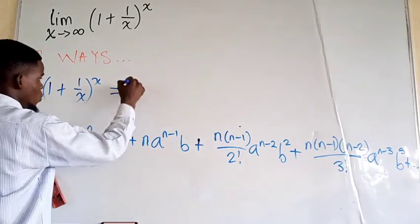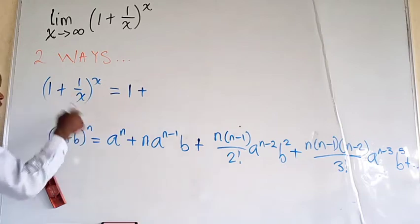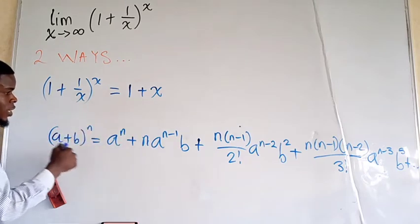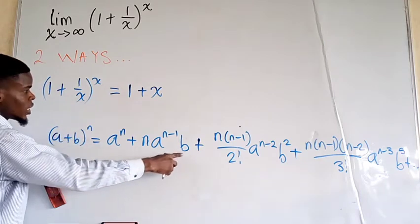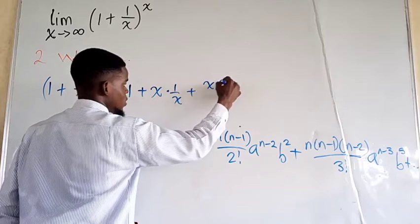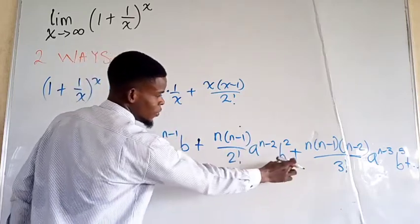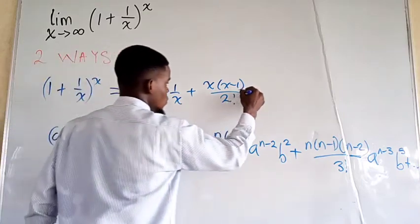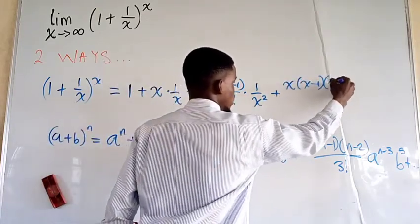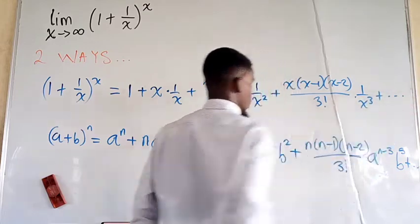So we write out the expansion: 1 raised to x is just 1, plus x·(1/x), plus [x(x−1)/2!]·(1/x)², plus [x(x−1)(x−2)/3!]·(1/x)³, and we continue in that manner.